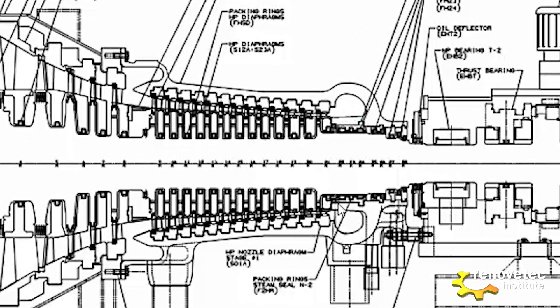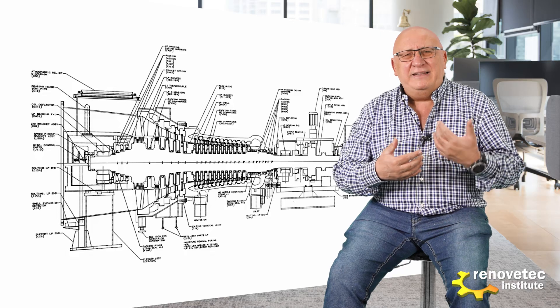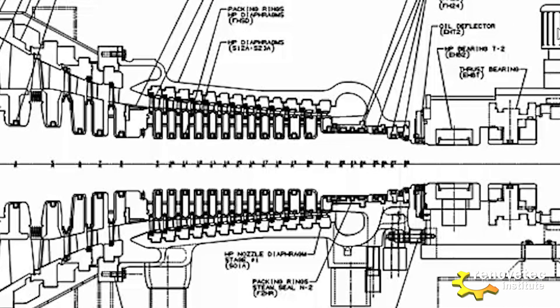Next, here is the labyrinth seal. Remember that we will dedicate one video to the labyrinth seal, because it is probably one of the parts that is most complicated to understand. We will explain especially how this system works. The labyrinth seal avoids the leakage of steam from the inner part of the turbine to the ambient.